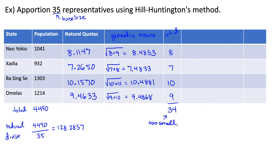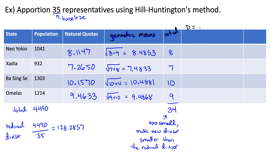So we would try a new divisor. Since we initially allocated too few seats, we want to make our new divisor smaller — the same technique we'd use for Jefferson and Webster. We could try 125, which is smaller than the natural divisor. Any divisor between 125 and 127 should work. We take each state population and divide by our modified divisor of 125 to get our modified quotas.